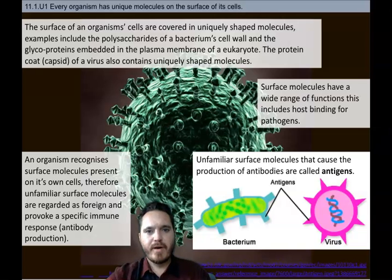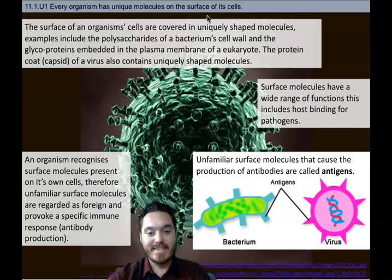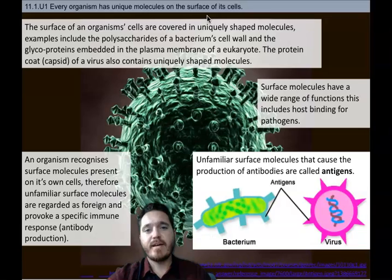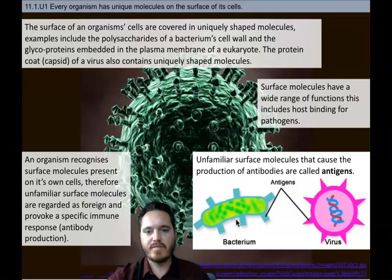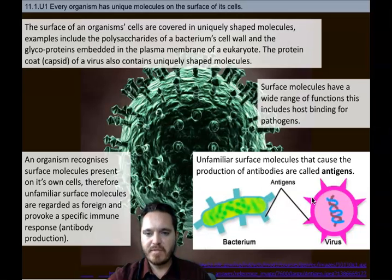Every organism has unique molecules on the surface of its cells, and those molecules are called antigens. These are involved with cell communication and your body's cells recognizing other cells as either being self-cells or non-self-cells. Here we have images of antigens on the outside of a bacterium and a virus, noted by those different shapes.